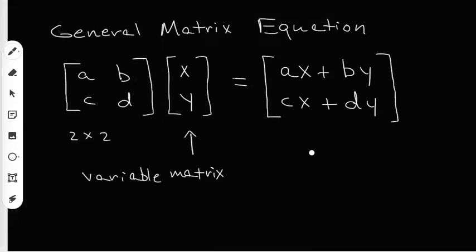So this resulting matrix is going to be a 2 by 1, just like the variable matrix was. That matrix X Y is also a 2 by 1 matrix. So this is the general matrix equation. And now what I can do is set it equal to another matrix, which maybe has different numbers. Let's say it has an E on top and an F on the bottom. So this 2 by 1 matrix is going to be set equal to this 2 by 1 matrix over here that I got when I multiply these first two matrices together.